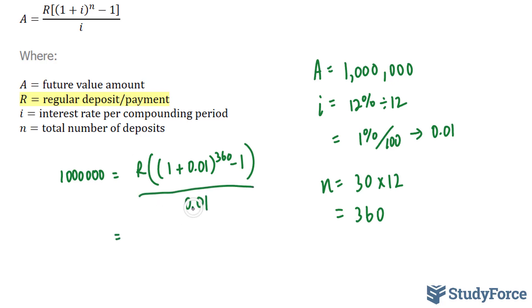And to solve for R, we have to get rid of the 0.01 that is located in the denominator position. So I'm going to multiply both sides by 0.01, and that will eliminate that. And on the left side, we have 0.01 multiplied to a million. You can evaluate the left side now. I'm just going to leave it the way it is.